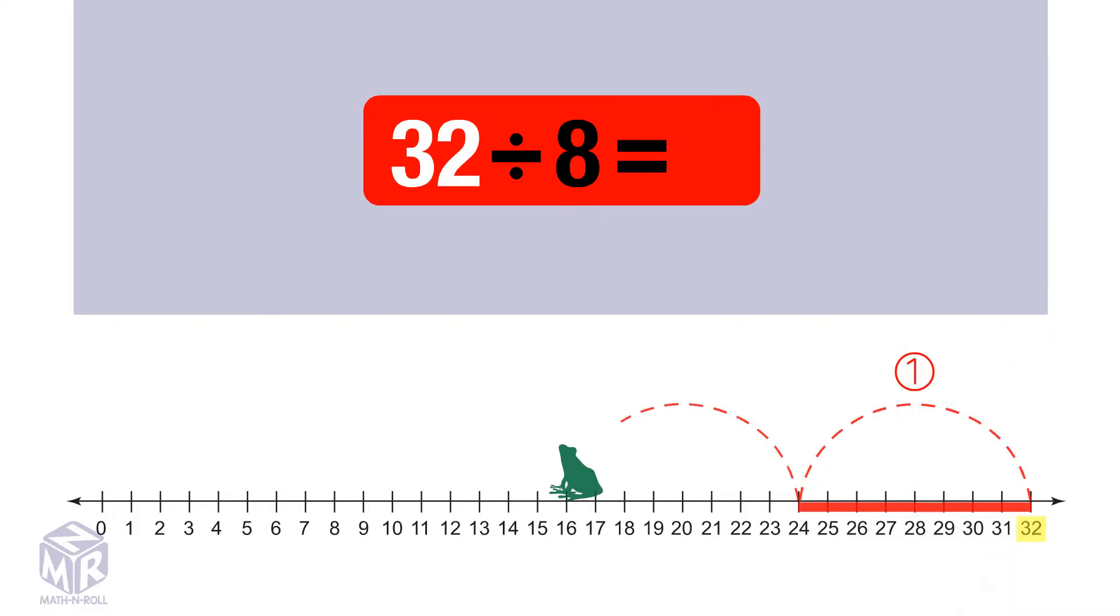1, 2, 3, 4. We jumped back 4 times, so 32 divided by 8 equals 4.